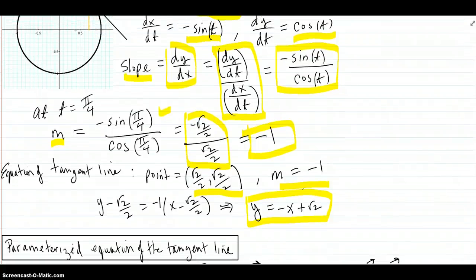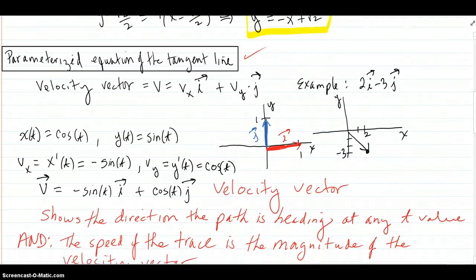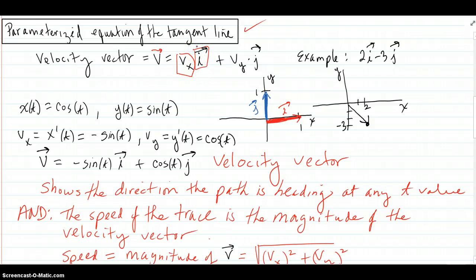Now we're going to find the parametrization equations for the tangent line — that's a different process. To do that, we need to understand the velocity vector. The velocity vector has an x-component times the unit vector i in the x direction, and the y-component times the unit vector j in the y direction.